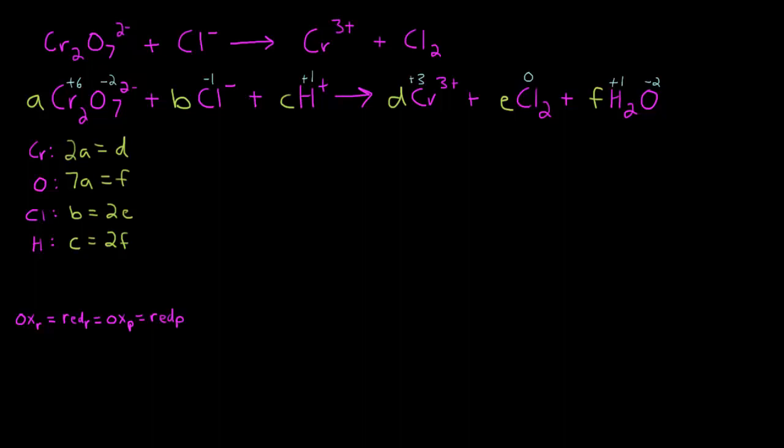Alright, so let's look at the forward reaction. Let's see what is being oxidized. Looks like we've got chlorine going from a -1 to a 0. So that is an oxidation of 1, it's in the B molecule, and there's only one chlorine there. So what's getting reduced? We've got chromium going from a +6 to a +3, so that's a reduction of 3. It's in the A molecule, and we have two chromiums.